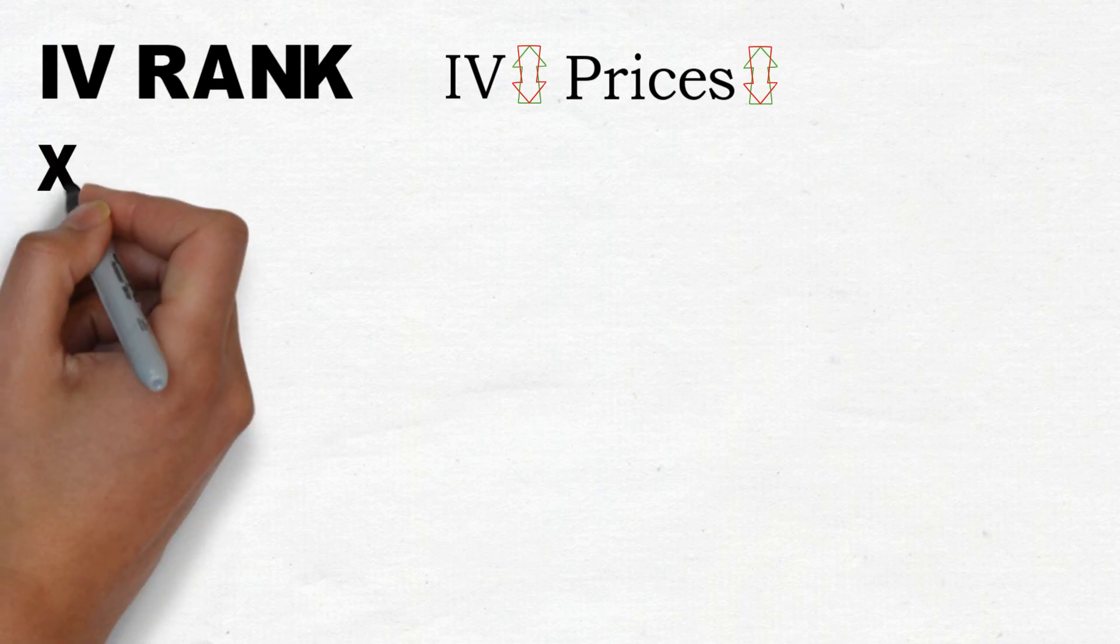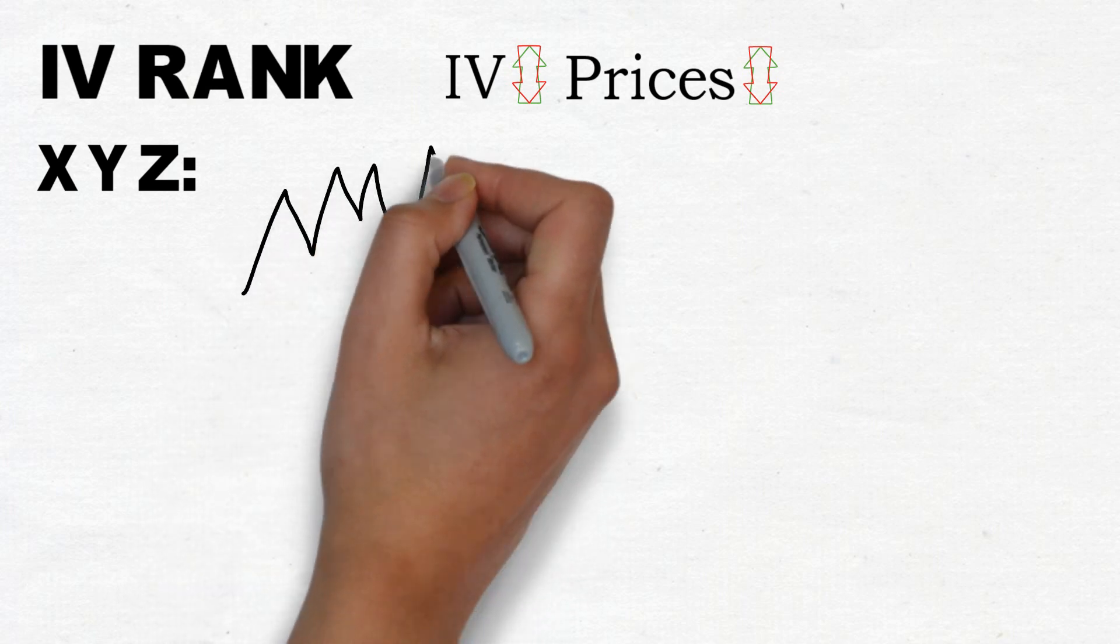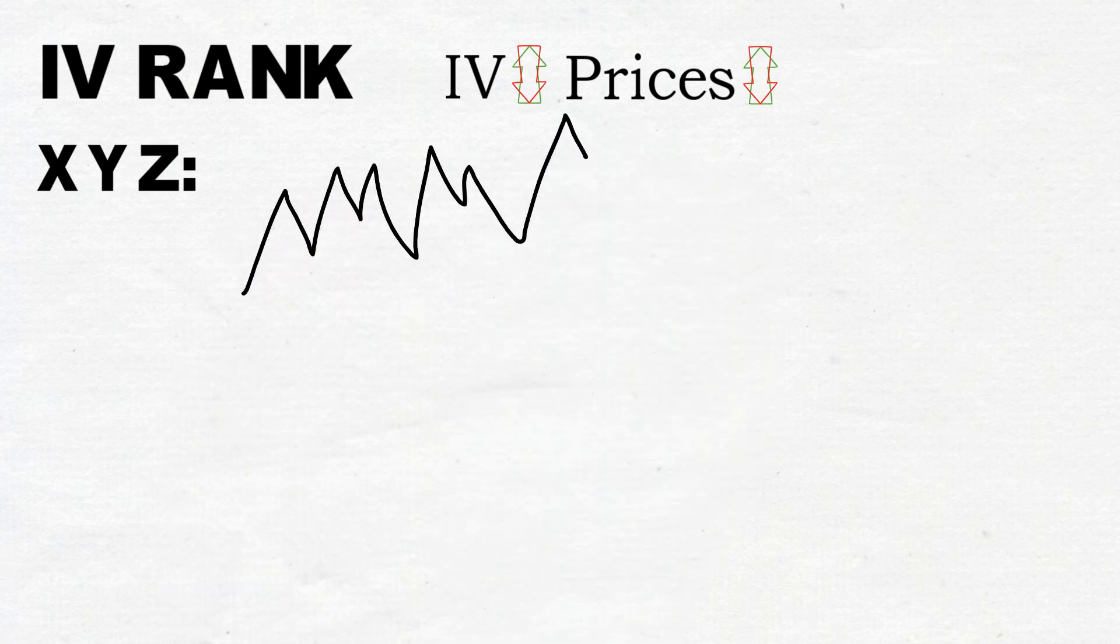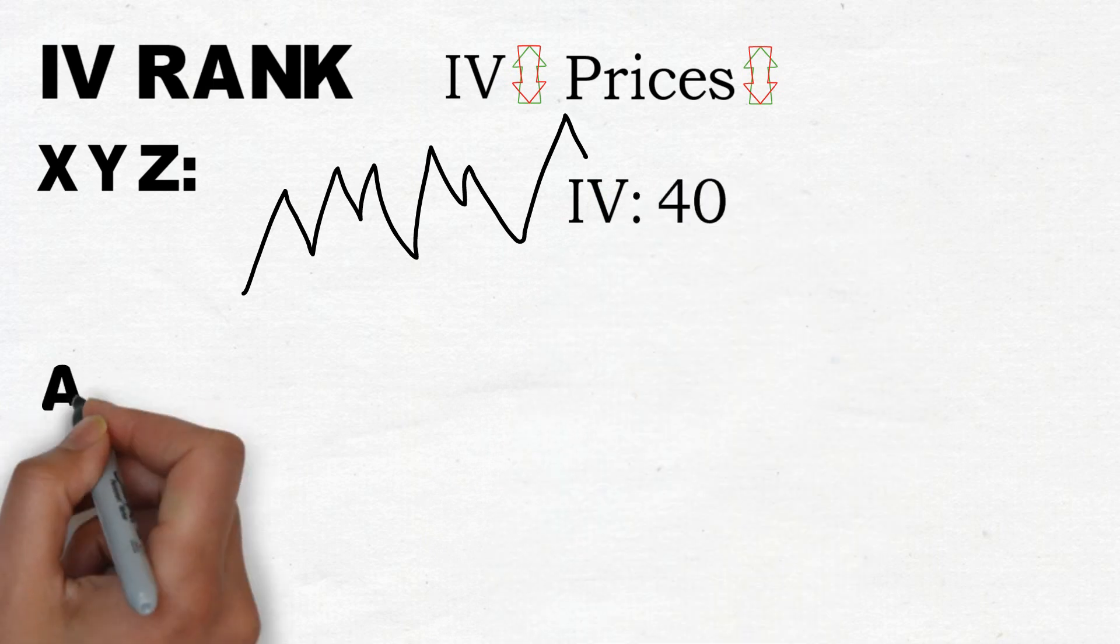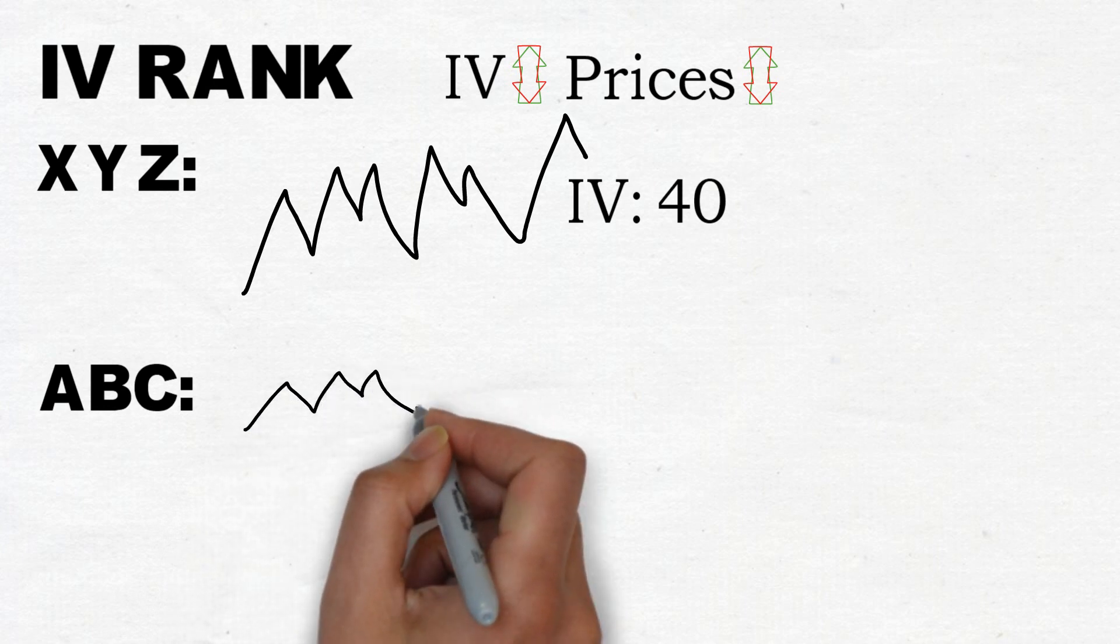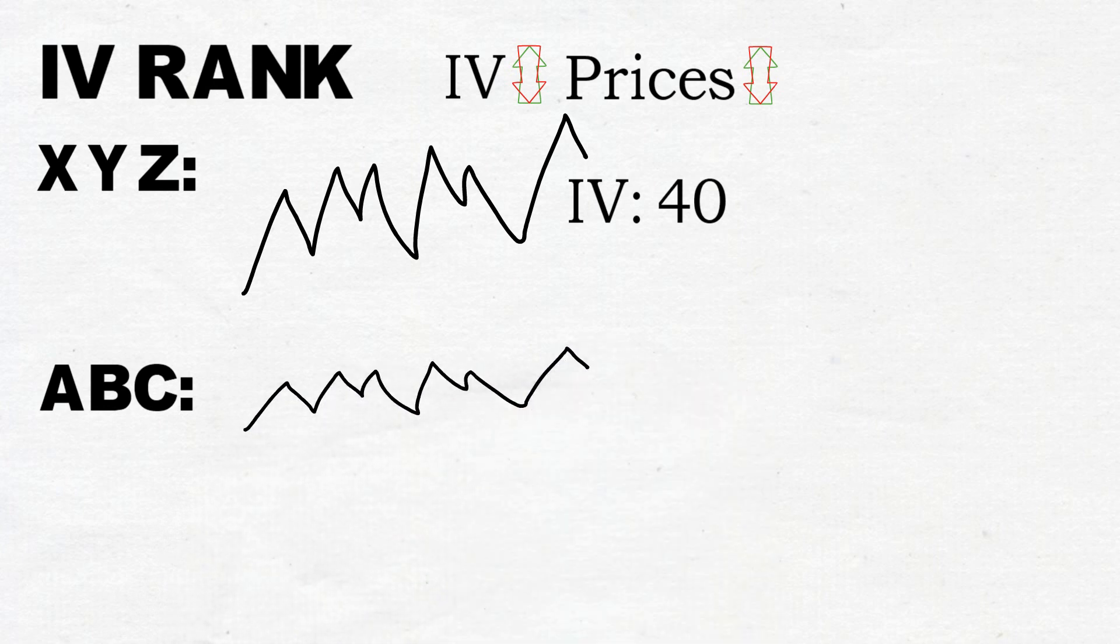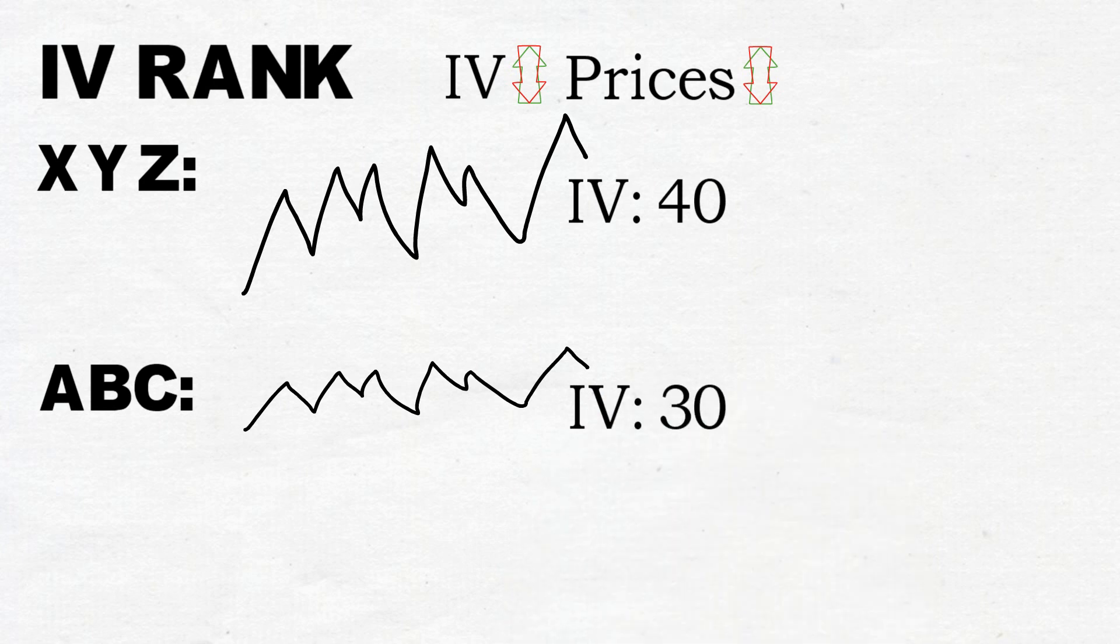For instance, if stock XYZ has an option with an implied volatility of 40% and stock ABC has an option with an implied volatility level of 30%, what does that mean? Just because the absolute implied volatility value of XYZ is higher than ABC, we can't just assume that its implied volatility is high relative to itself.